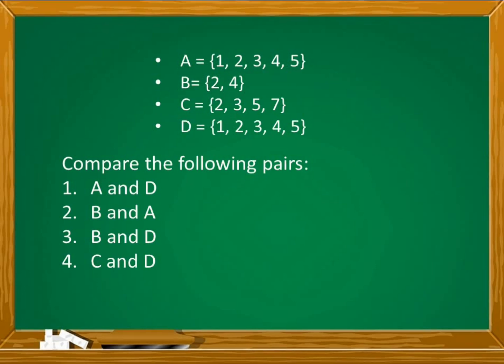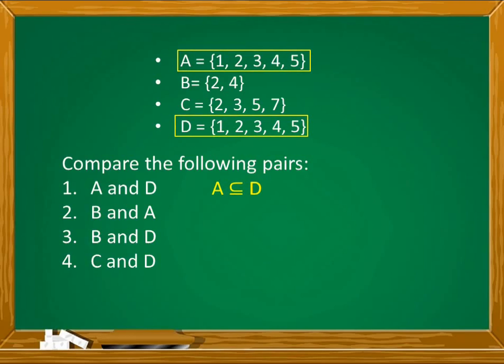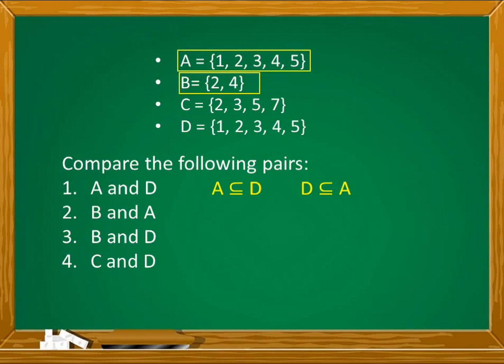So what have you noticed? For number 1, set A and set D have the same elements. We can say that A is a subset of D — all elements of A are in D, and all elements of D are also in A. It is also correct to say that D is a subset of A. For number 2, sets B and A: B is a proper subset of A. All elements of B, which are 2 and 4, are in A, and A has extra elements that are not in B.